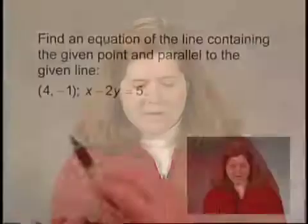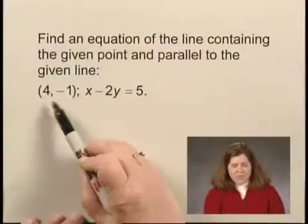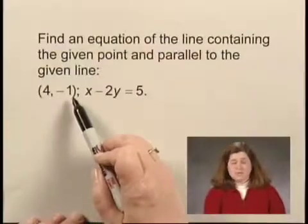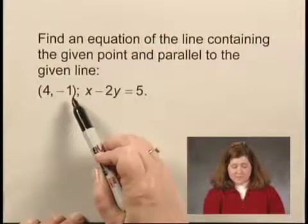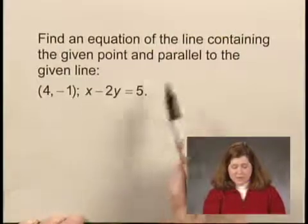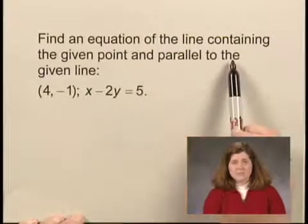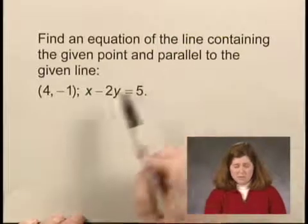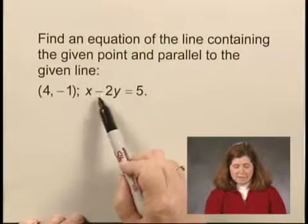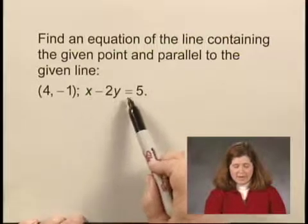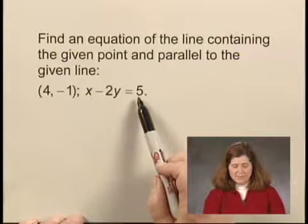We'll now find an equation of a line. We're given that the point (4, -1) is on the line, and we're also told that the line is parallel to the line x minus 2y equals 5.